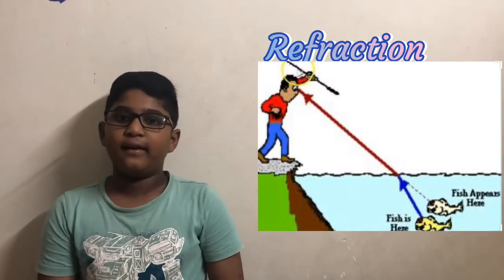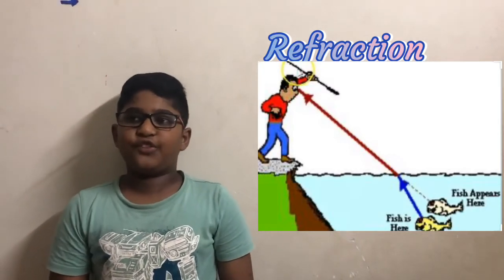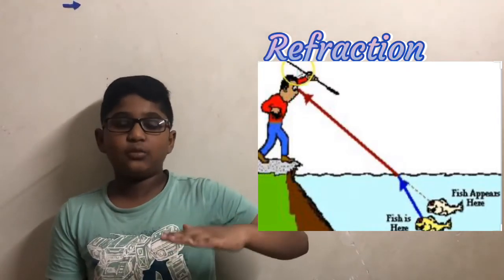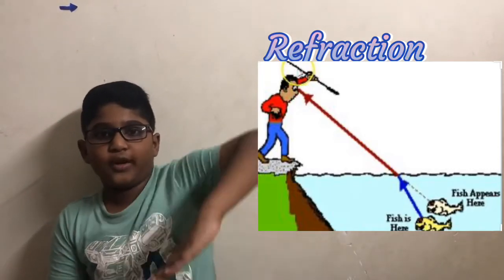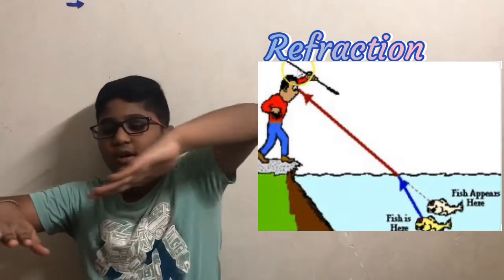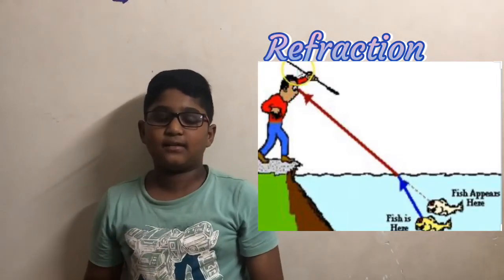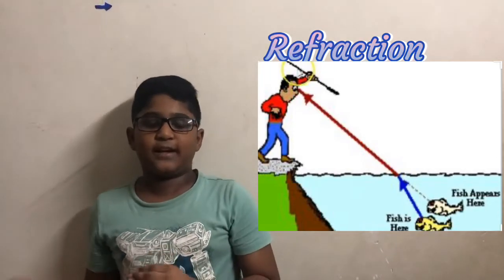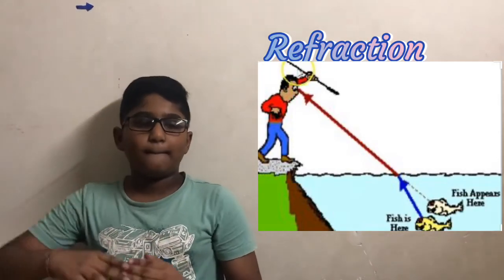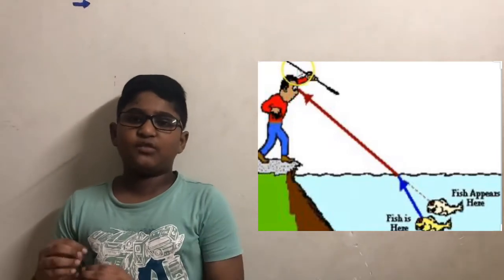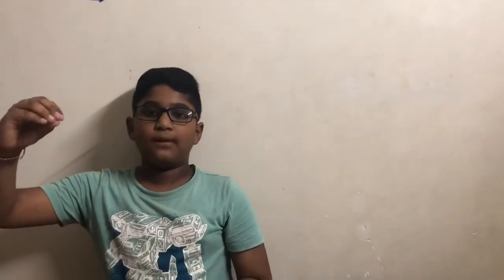Here's another example: when you go to a clear water lake, you can see fish. The fish is not in the exact position because light velocity is faster in air, so it goes straight. When it hits the water, it slows down and bends. The light penetrates and since the water is dense, it bends — and the fish will appear not in its exact position.